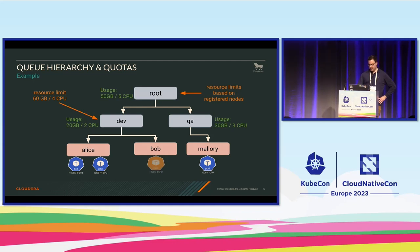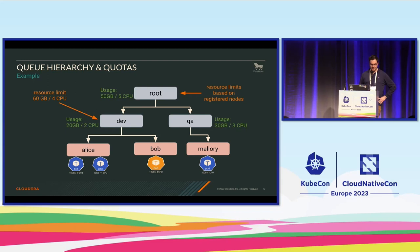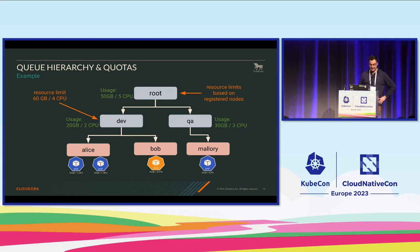Bob wants to run a pod, but unfortunately it cannot run at the moment — it's pending. Why? Because of the limit. The pod is asking for 4 CPUs; there's nothing wrong with the memory. But the current usage at the dev queue is 2 CPU and there's a limit of 4 CPU — not enough. Bob has to wait until Alice's pods terminate. It's important to note that Bob's pod is pending, not rejected.